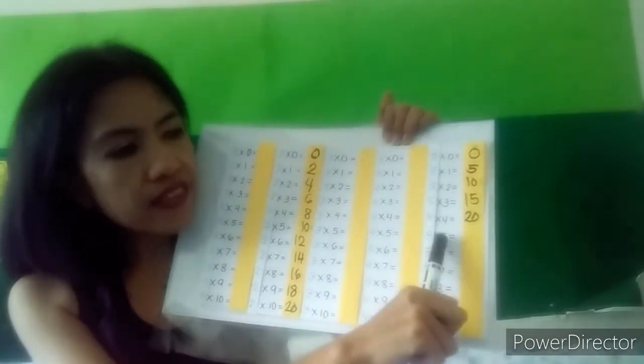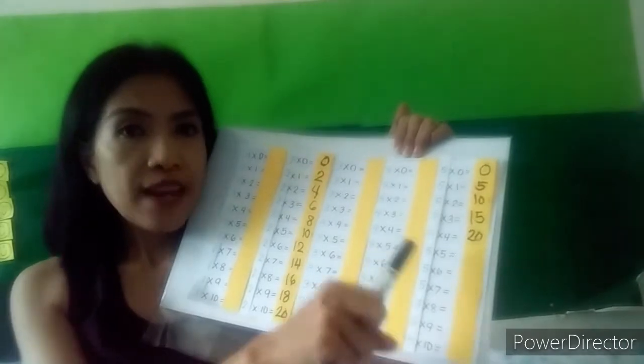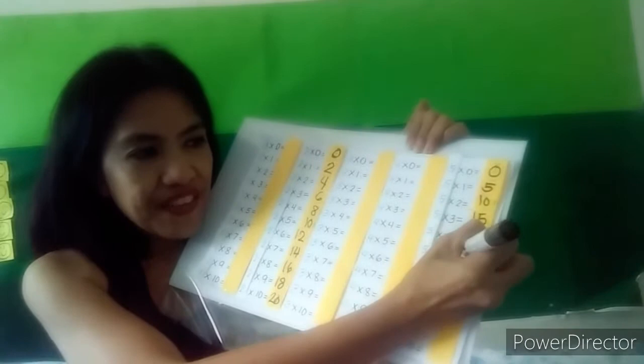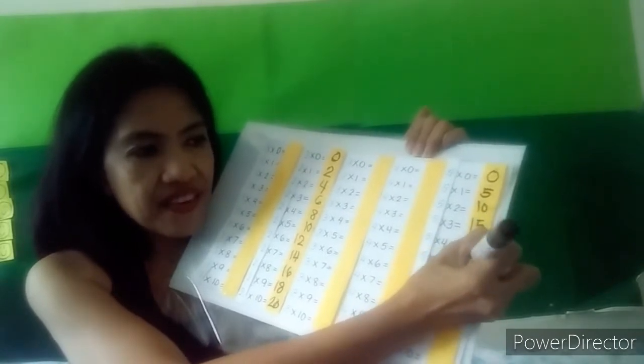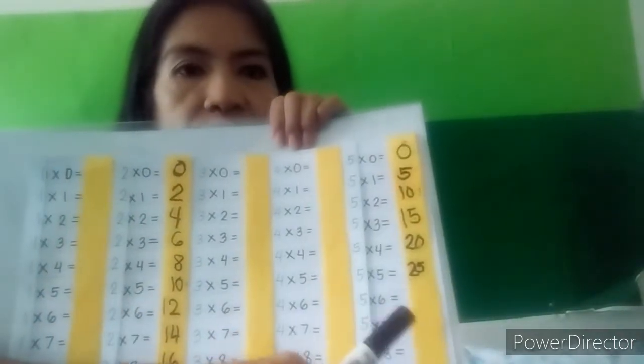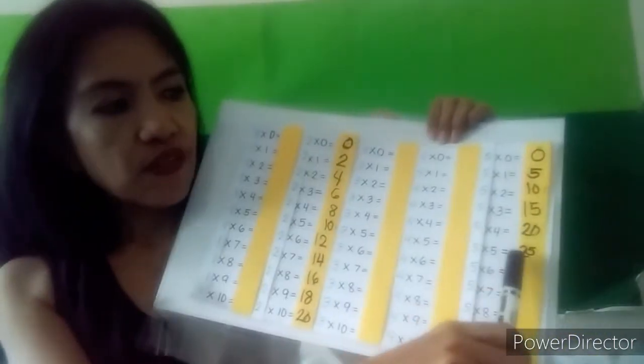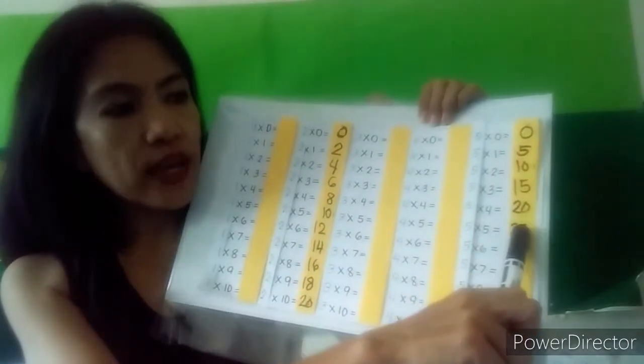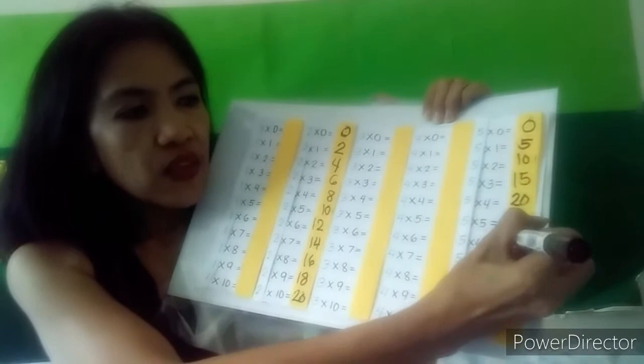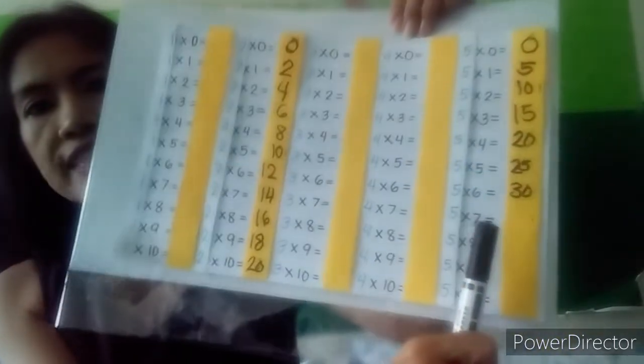Five times five: twenty plus five is twenty-five. Five times six: twenty-five plus five is thirty, so five times six is thirty. Five times seven: thirty plus five is thirty-five, so five times seven is thirty-five.